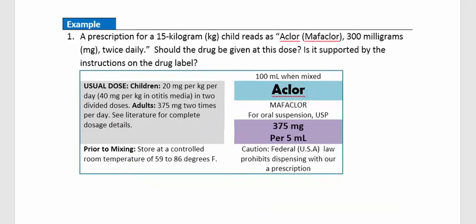Let's take a look at Example 1. A prescription for a 15 kg child reads A-Chlor (mafachlor) — the brand name with the actual drug name — 300 mg twice daily. Should the drug be given at this dose? Is it supported by the instructions on the drug label?